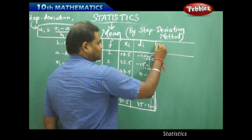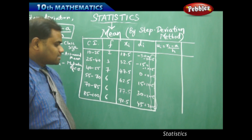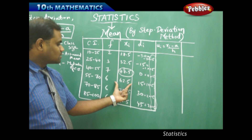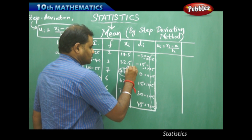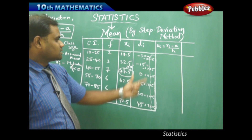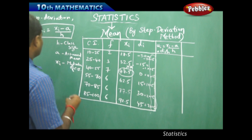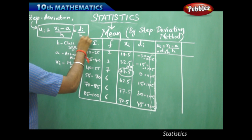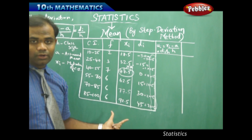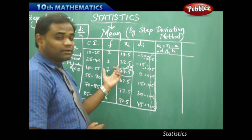The step deviation ui is given by the formula: ui = (xi − a) / h, where a is the assumed mean, h is the class size, and xi is the mid-value of the class interval. Finding the step deviation from the deviation is what we do in the step deviation method. Let's see how ui can be calculated for each class interval.